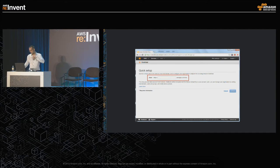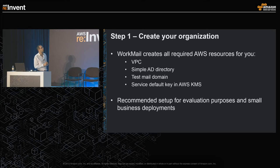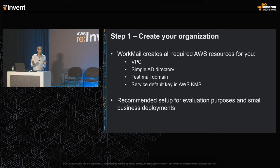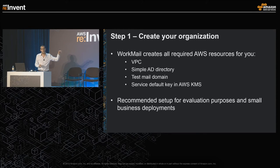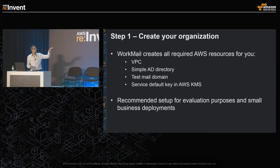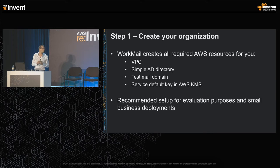Once you fill in the alias and press Create, we kick off a background workflow that creates all required resources. We spin up a new VPC in your AWS account, create a Simple AD directory in that VPC — since WorkMail relies completely on the AWS Directory Service for its users — create a test mail domain using Amazon SES for all incoming and outgoing email, and finally create a service default key in the AWS Key Management Service.